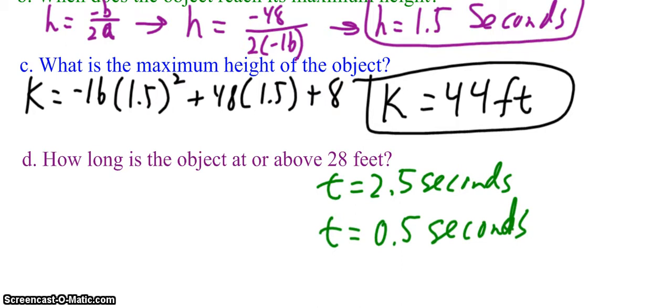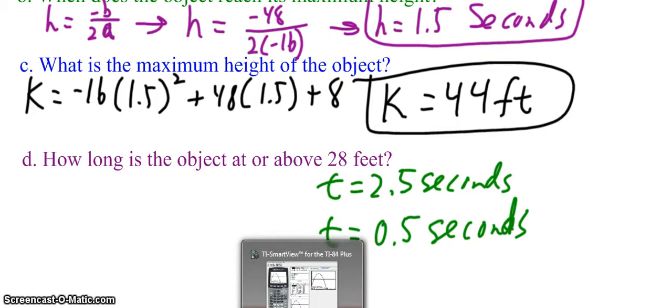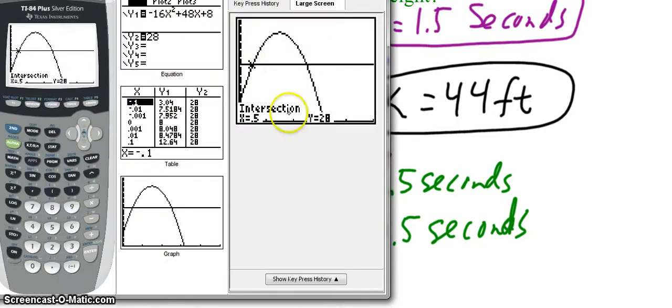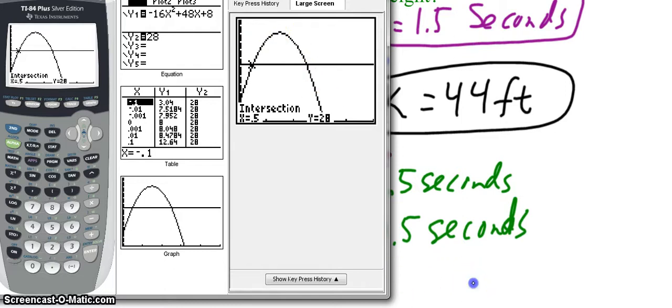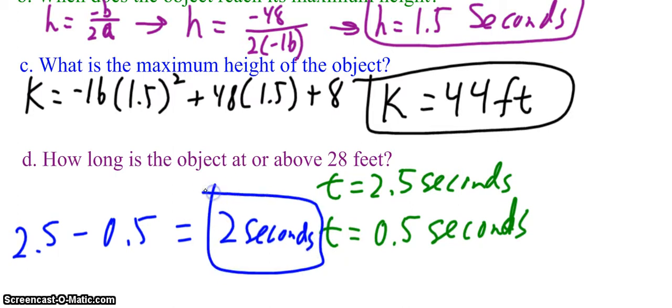So I also know then that I have an intersection here, right? And so again, the question is asking how long is the object at or above 28 feet? So if we know this is 0.5 seconds and this is 2.5 seconds, how long was it at or above 28 feet? It would be 2 seconds because I know that 2.5 minus 0.5 is 2 seconds.